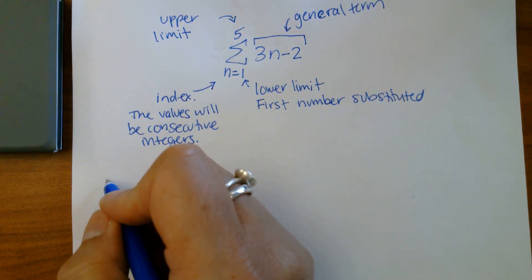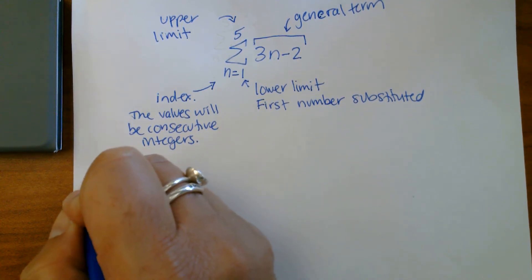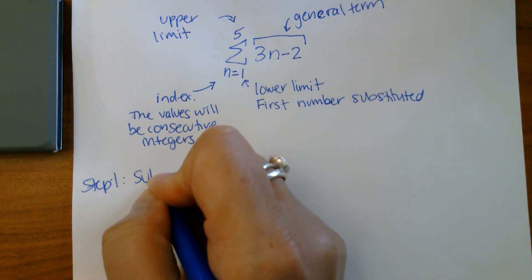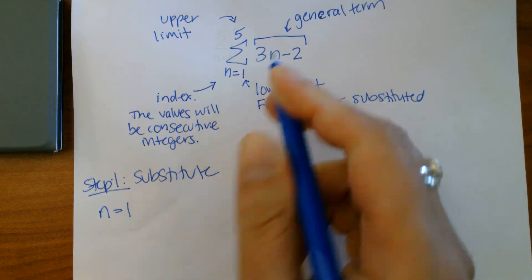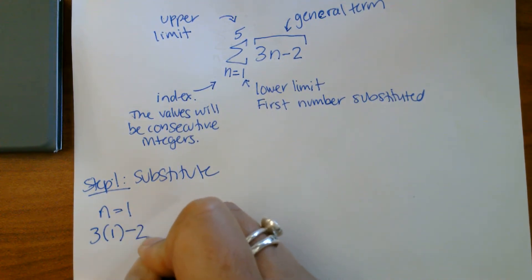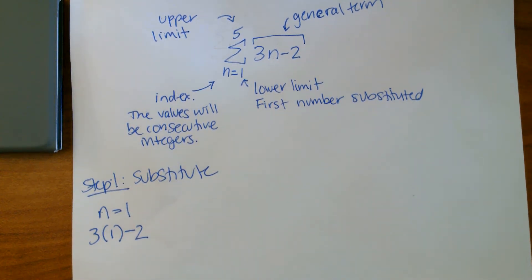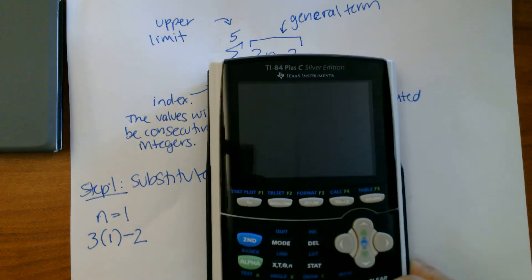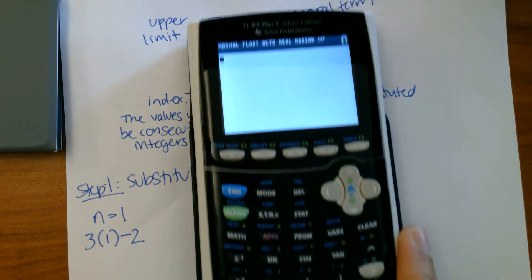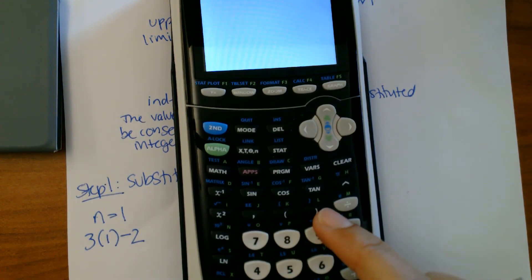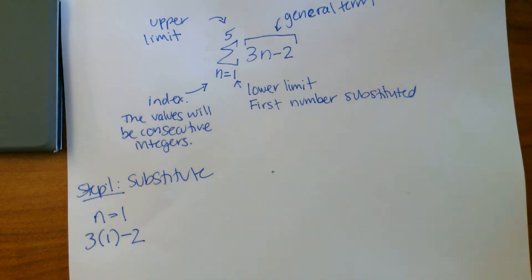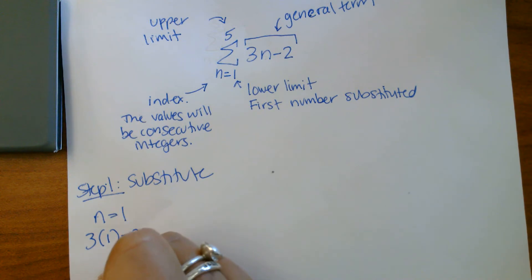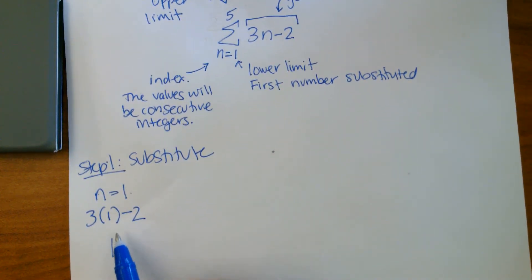So the first step is going to be to substitute each number in. Step one: substitute. First we have n equals one, so we're going to take our general term three times one minus two. In the calculator, you can simply put in three times one minus two, making sure that you use your parentheses — the parentheses are above the eight and the nine button. When we substitute the number one in, we get an answer of one.